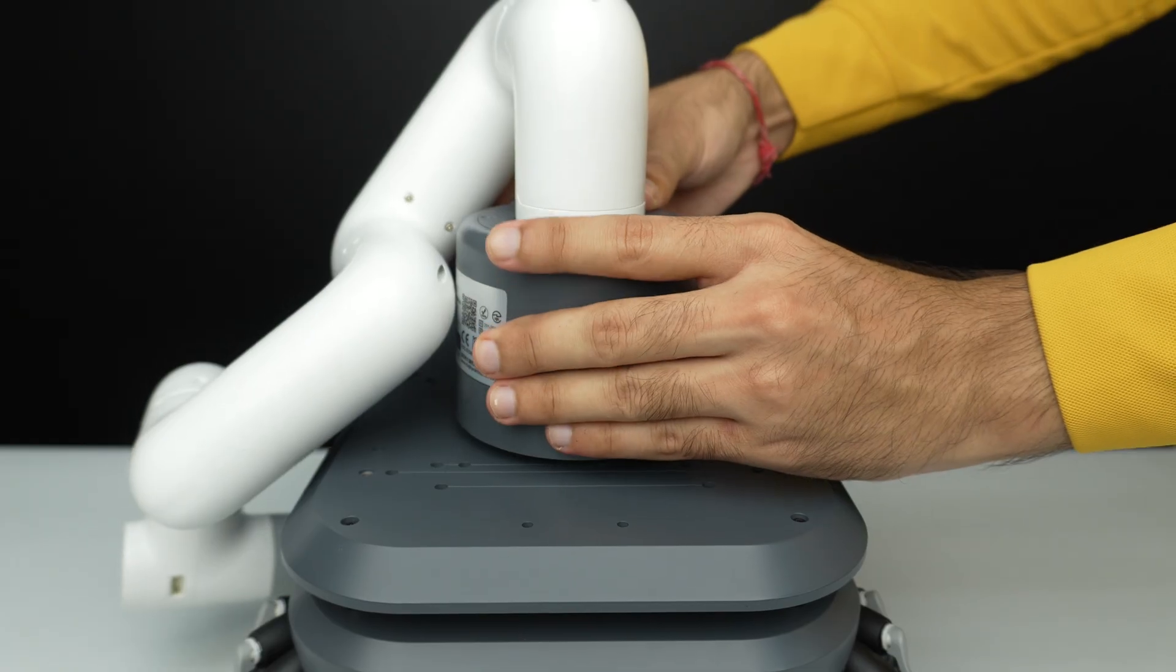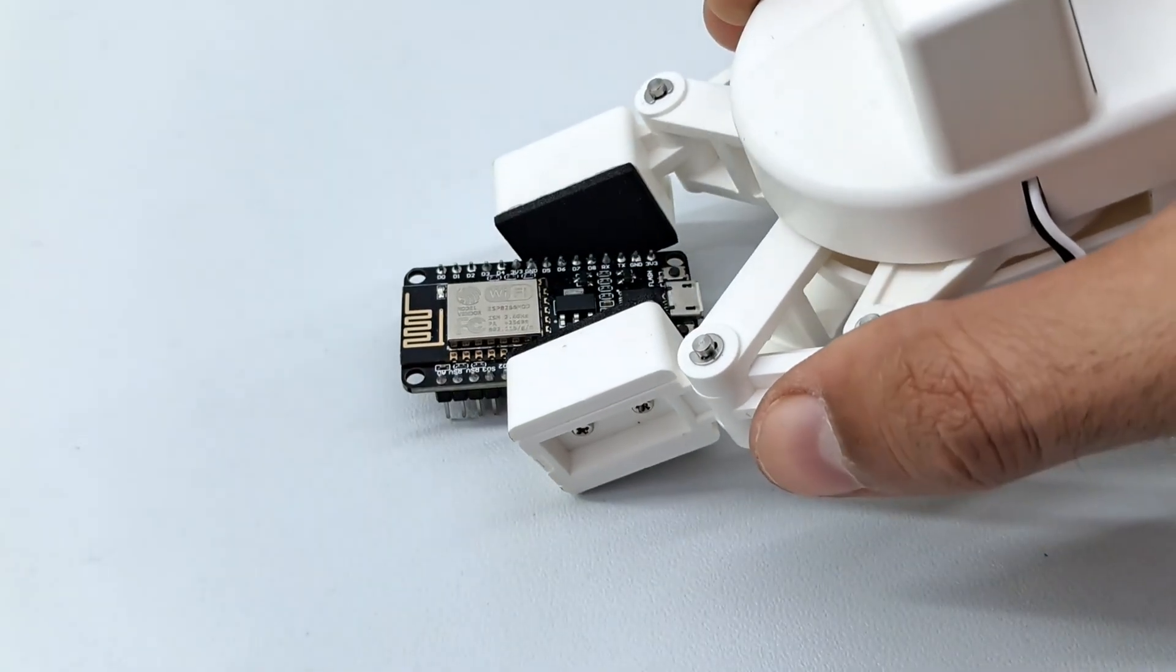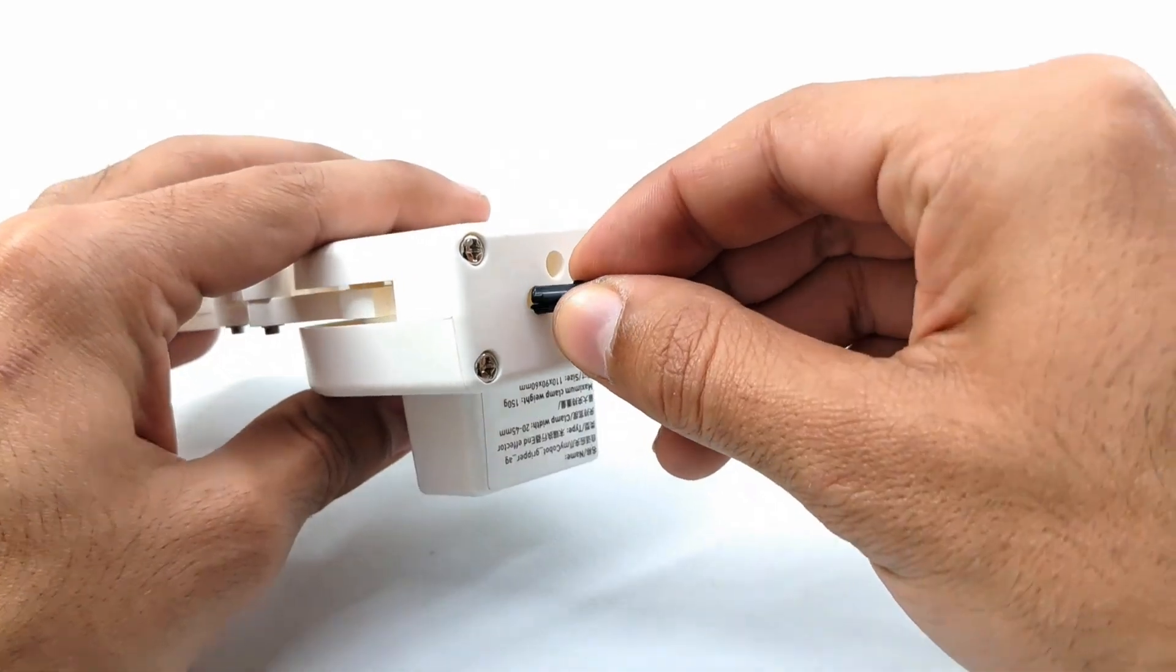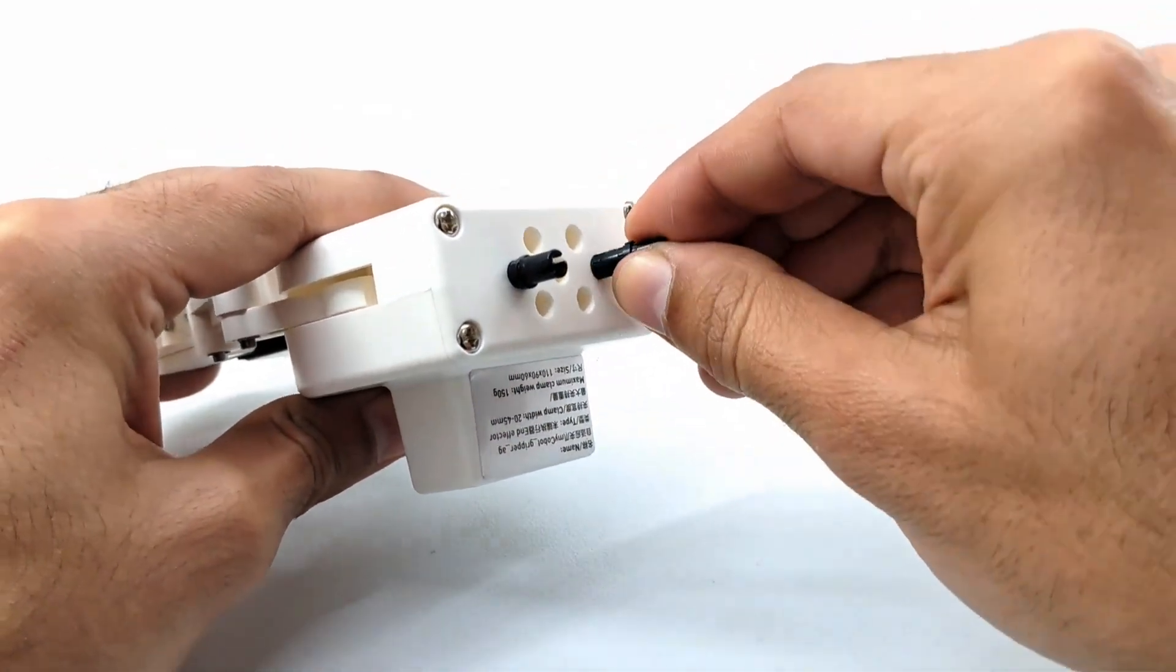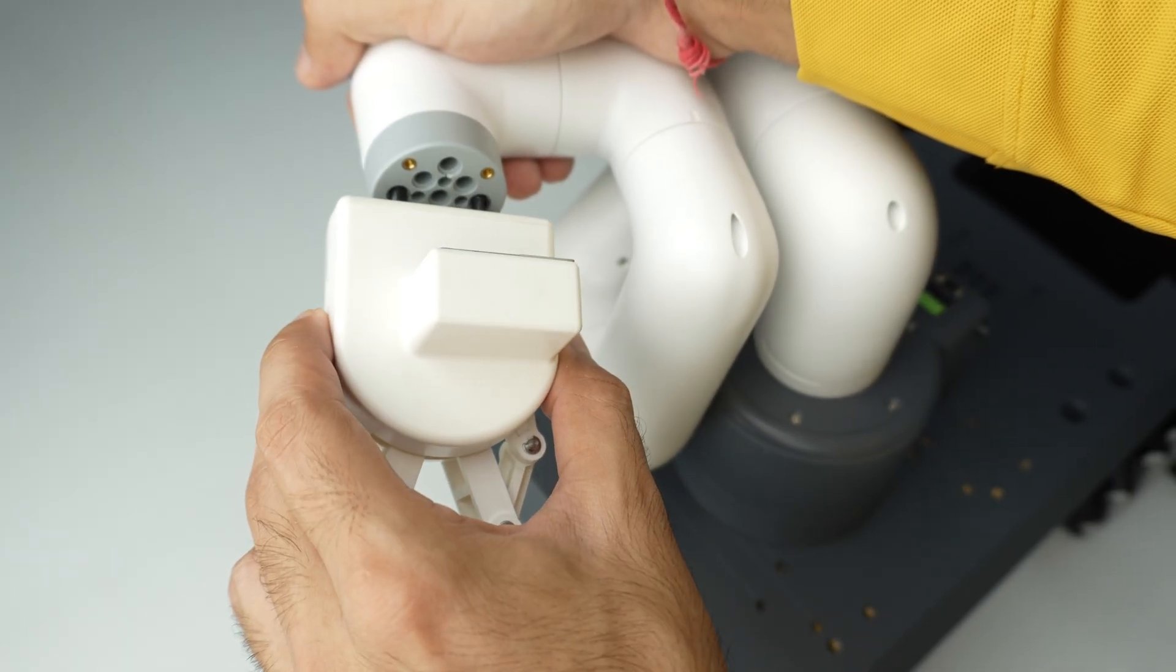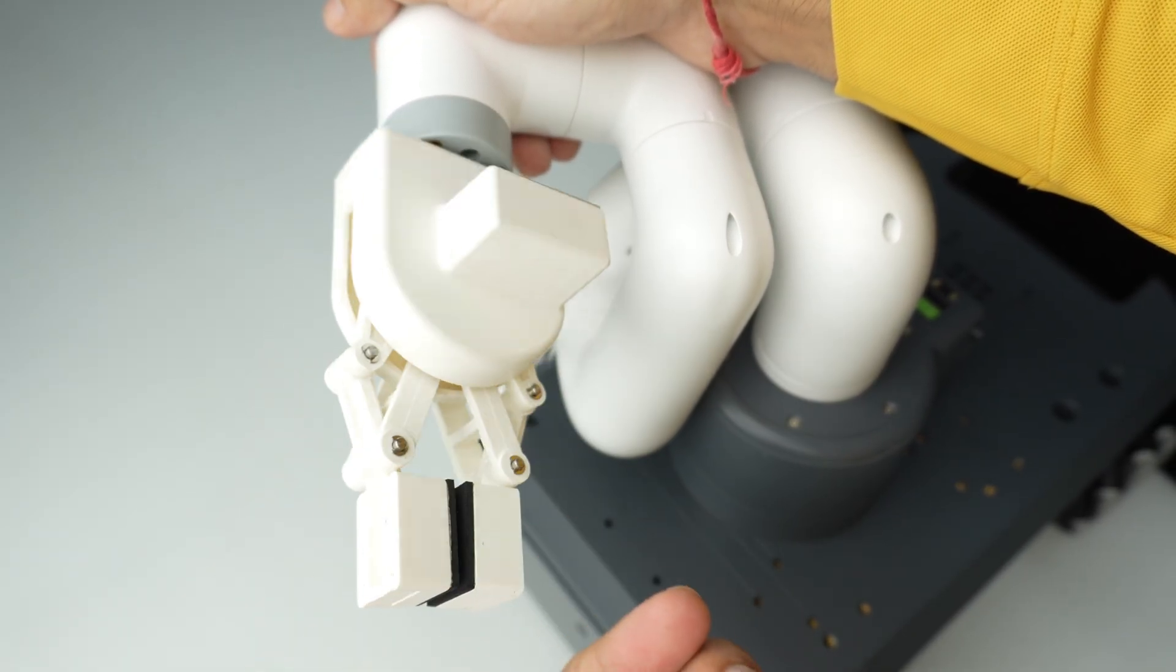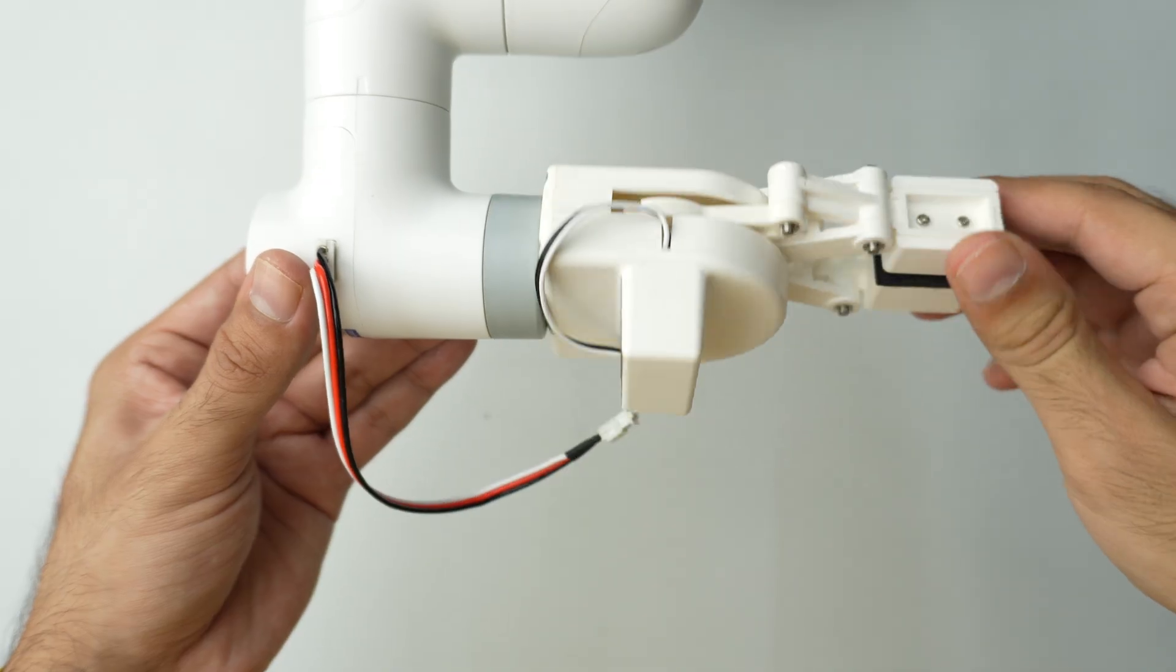This is an adaptive gripper used to grab objects. Connect this to our MyCobot using the Lego connectors. This is an extension wire for free movement of the gripper.